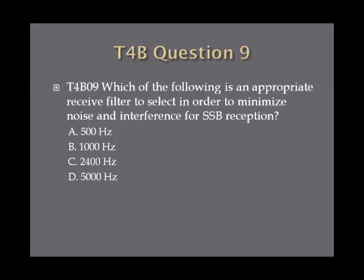Question 9. Which of the following is an appropriate receive filter to select in order to minimize noise and interference for single sideband reception? A. 500 Hz. B. 1000 Hz. C. 2400 Hz. D. 5000 Hz.